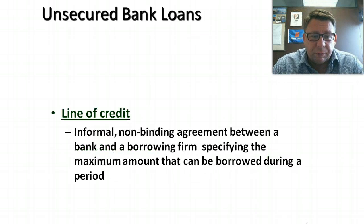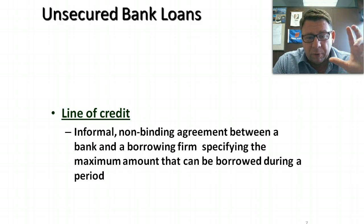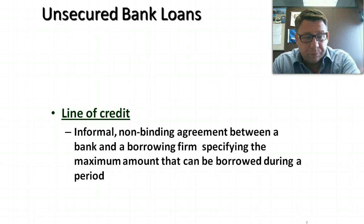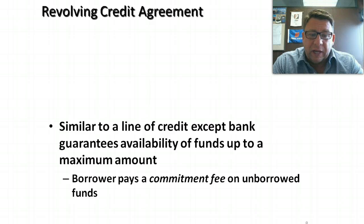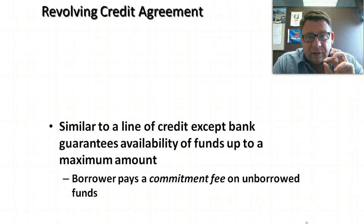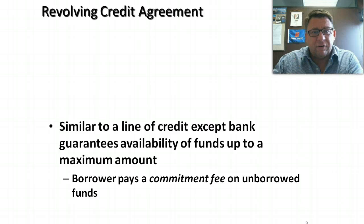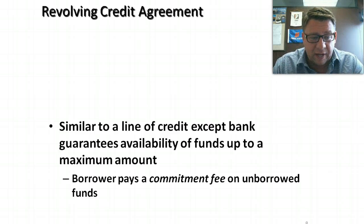Some other types of unsecured bank loans. A line of credit — for most businesses, this is an informal, non-binding agreement between the bank and the firm specifying a maximum amount that can be borrowed during a period of time. The reason it's non-binding is that if the bank wants to rescind this, they can. That's a little bit different than a revolving line of credit. A revolving line of credit is where the bank actually guarantees the availability of funds. With the line of credit, it's available but the bank can rescind it. With the revolving line, the bank guarantees those funds will be available.